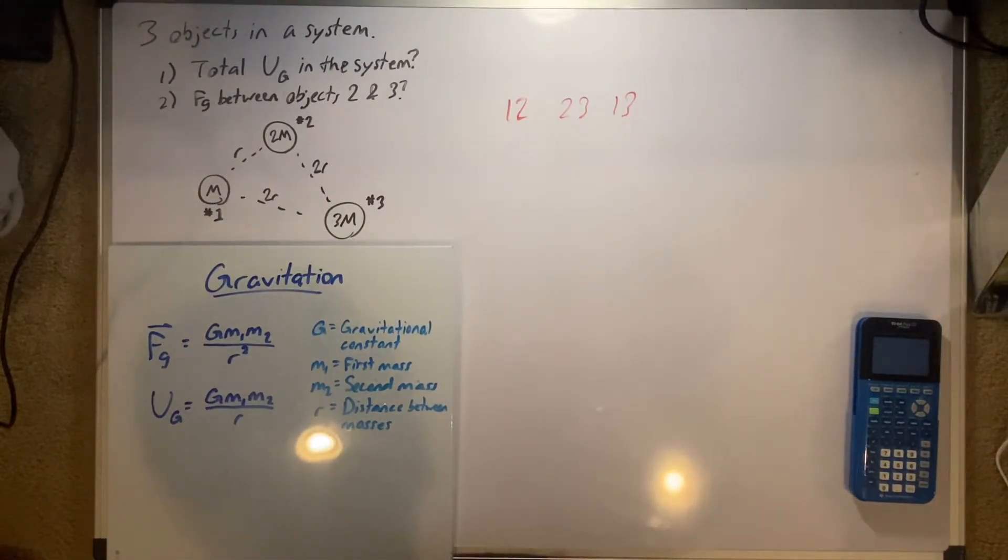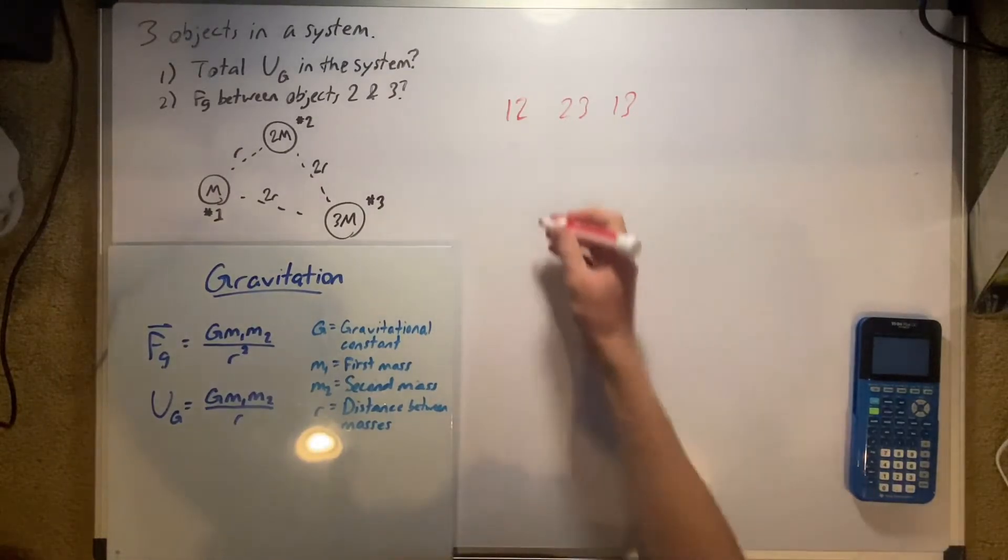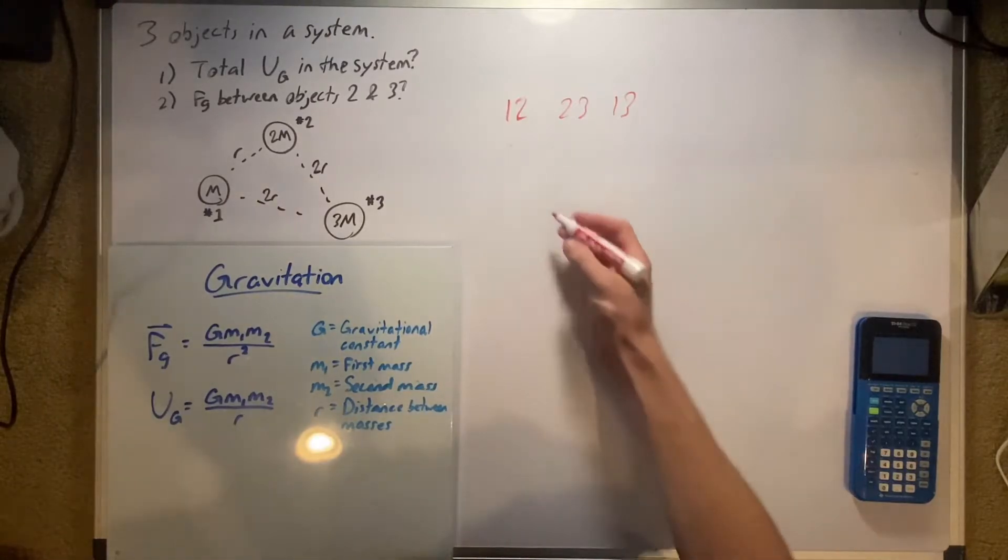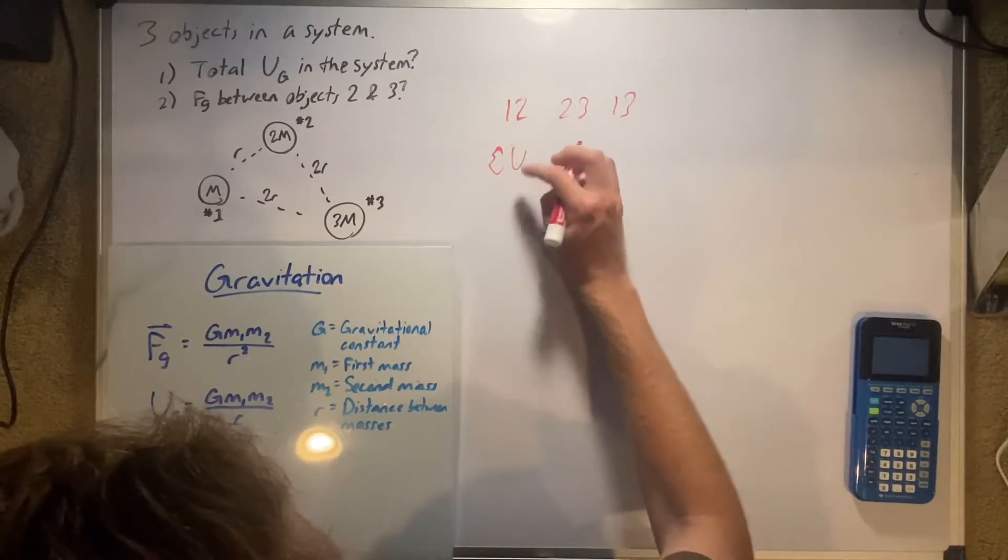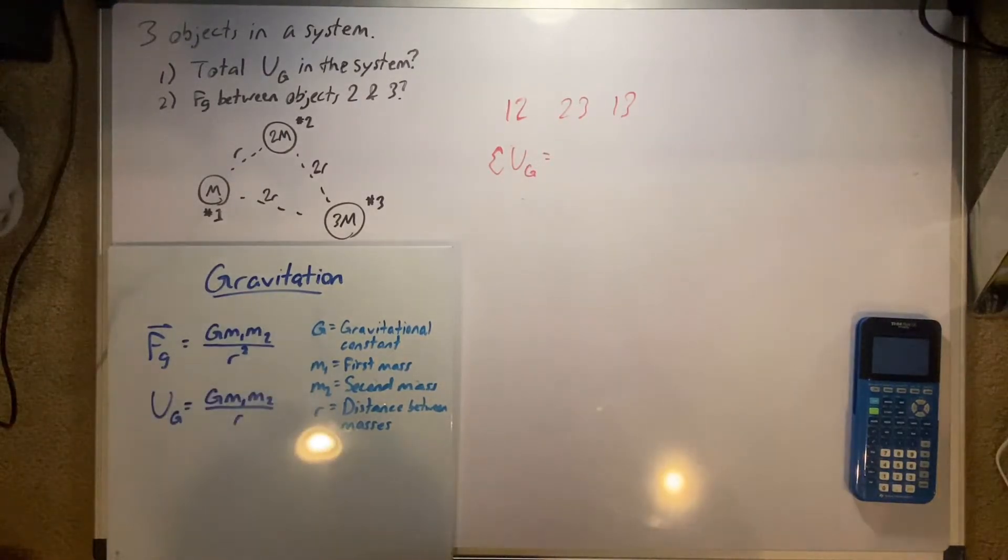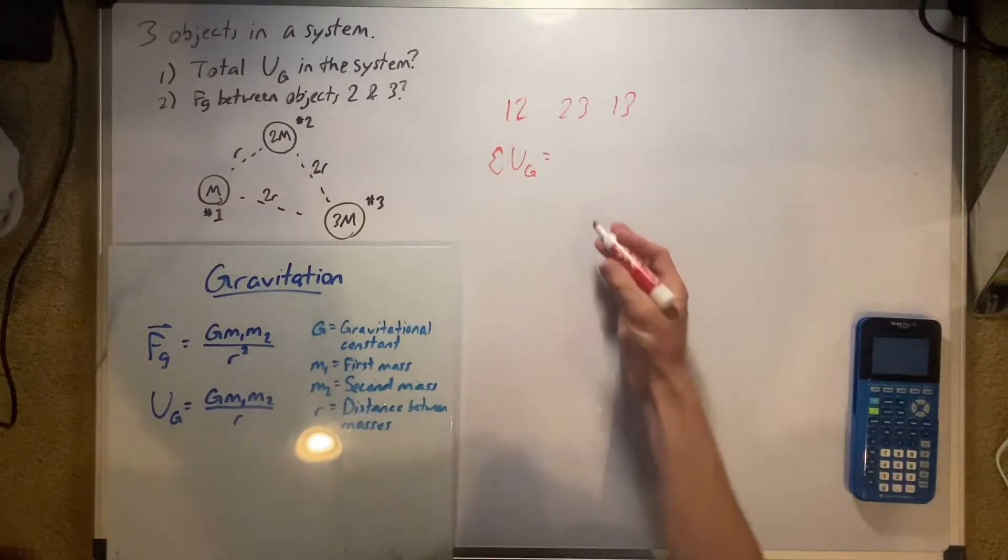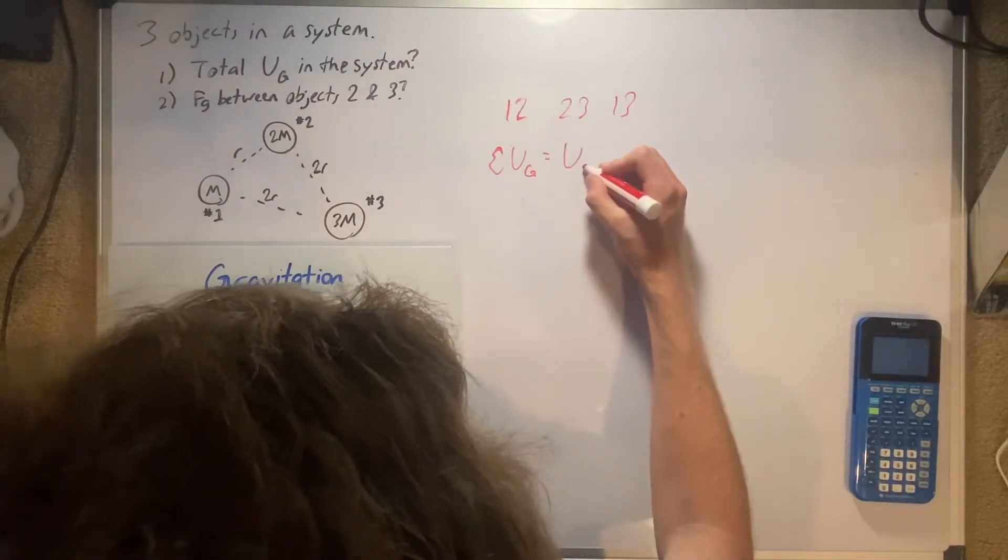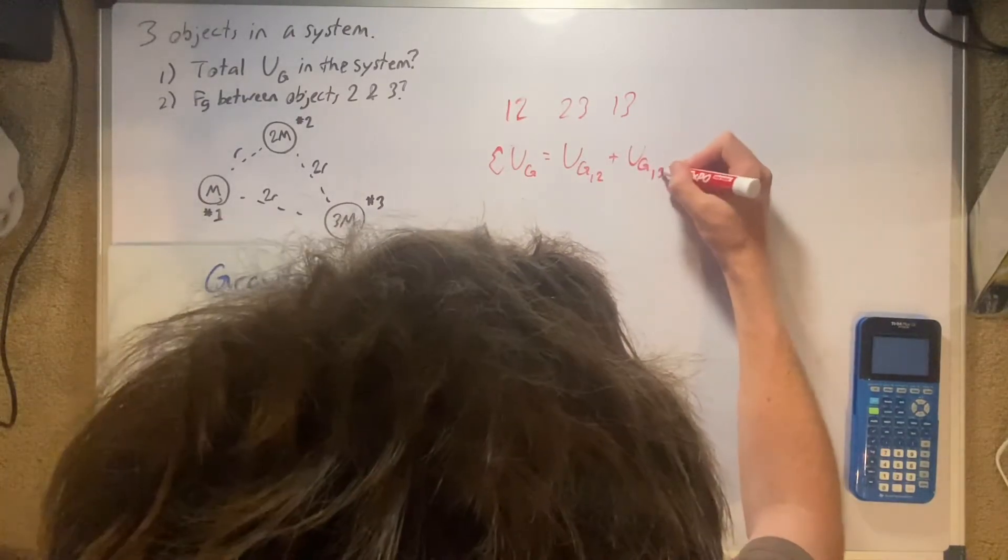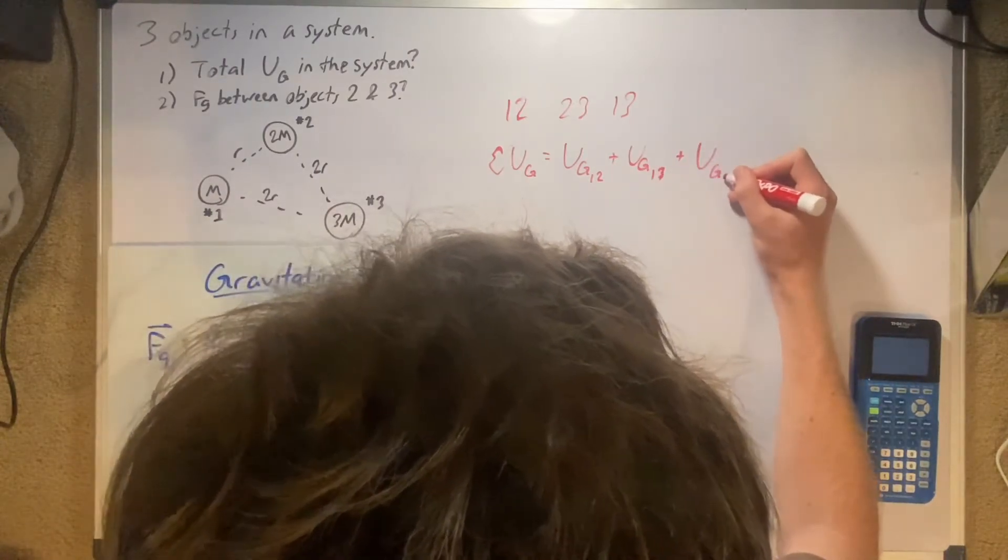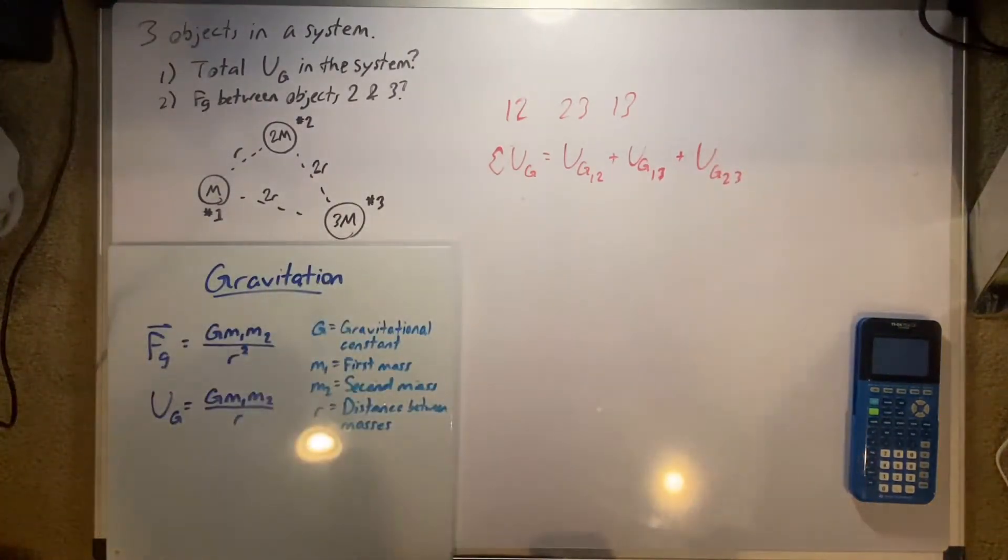So now we'll think about how this interacts here, and we're looking for the total gravitational potential energy, which means that we're going to find the sum of all of that. So making sure I picked up the right pen, yes I did. So I'm going to use sigma UG, capital G, to specify that it's different from the other one, is equal to the UG between one and two, plus the UG between one and three, plus the UG between two and three.